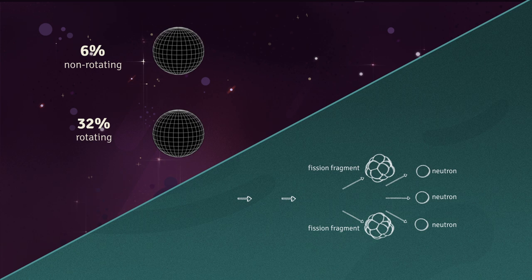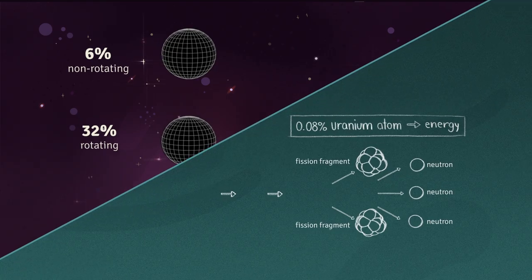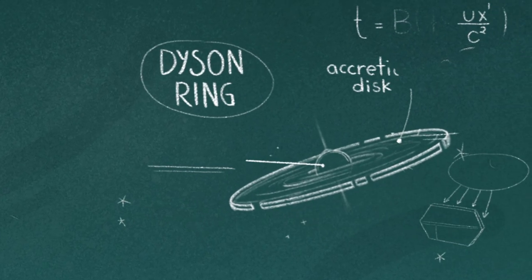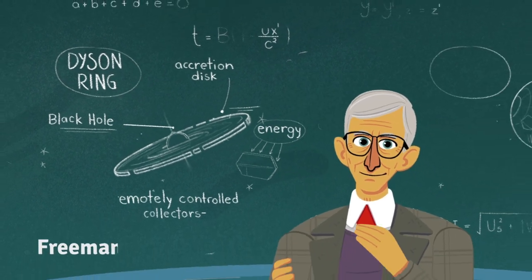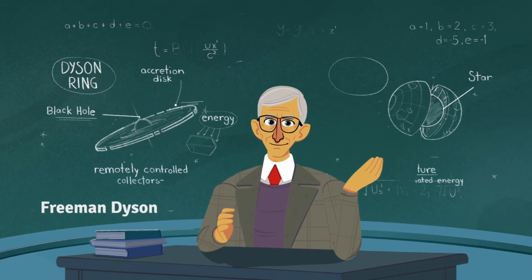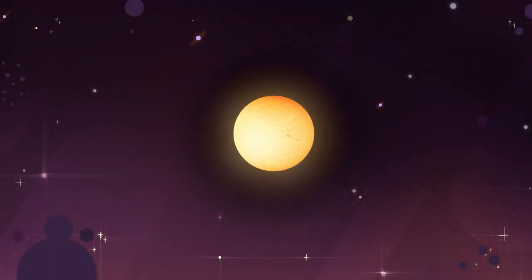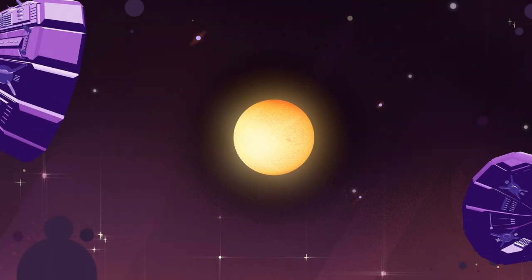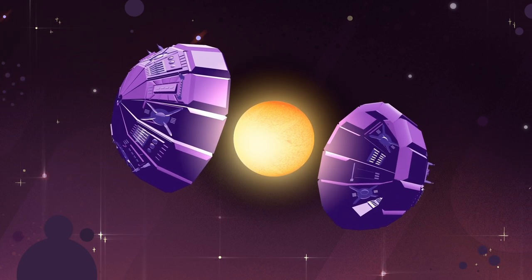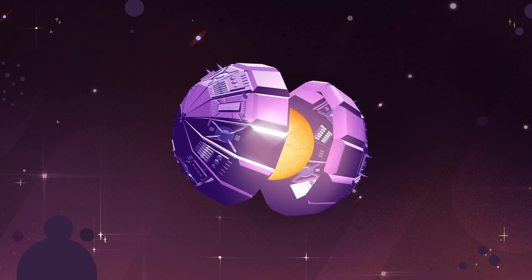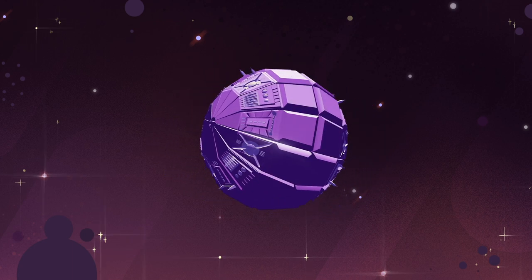The key to harnessing this power may lie in a structure devised by physicist Freeman Dyson, known as the Dyson Sphere. In the 1960s, Dyson proposed that an advanced planetary civilization could engineer an artificial sphere around their main star, capturing all of its radiated energy to satisfy their needs.